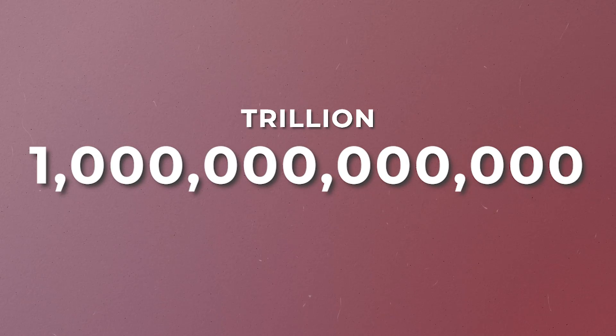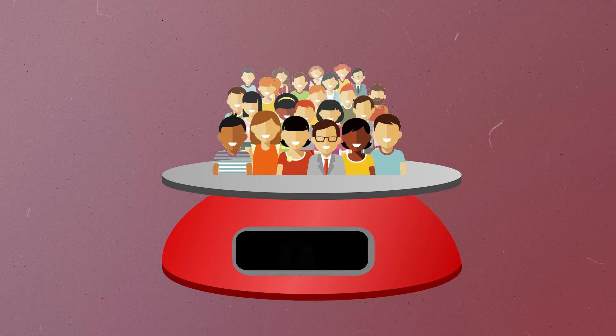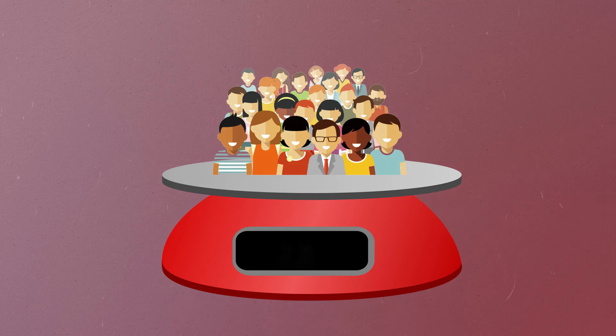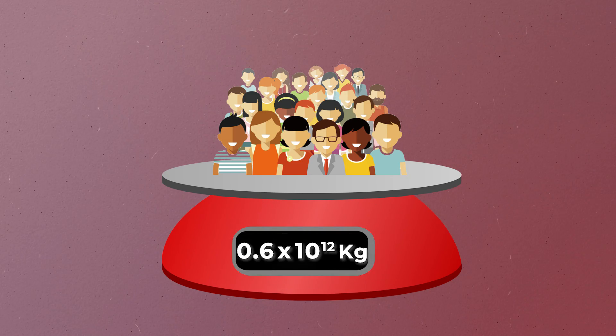Adding a zero, we get a new name: a trillion, which is a million millions. If you created a very big scale and weighed all the people on this planet, this is what the scale would read — 1 trillion pounds, or about 0.6 trillion kilograms.